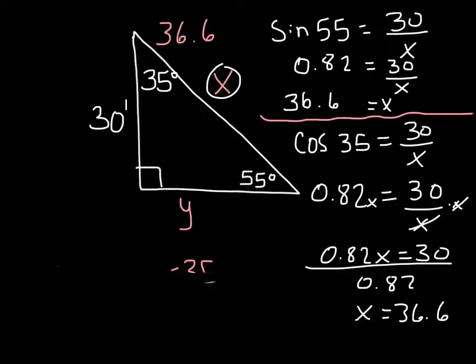All right. So what about this y value? Well, from here, we could use the Pythagorean theorem. We could use, because now we know the hypotenuse, we could use the cosine of 55. We could use the sine of 35. We could use all different kinds of ratios to solve for y. But I'm going to leave that part up to you. All right, guys. Thanks for watching. Be ready to come to school and apply some of this stuff.